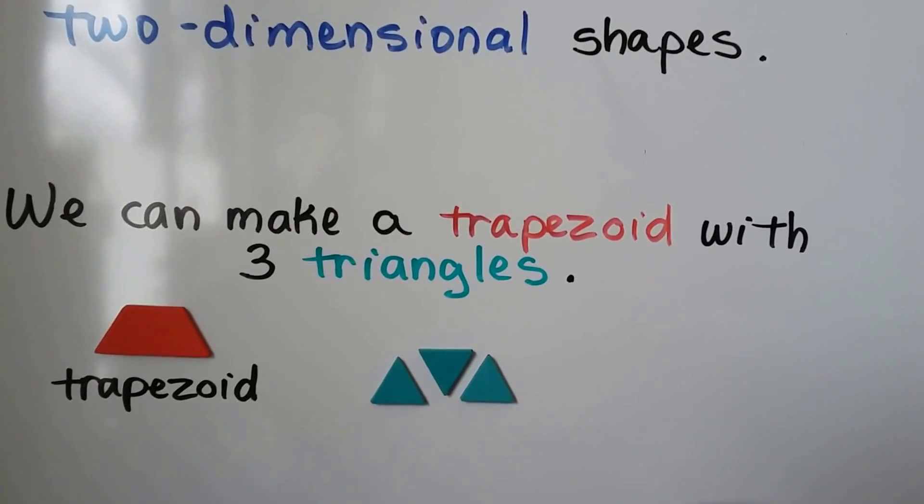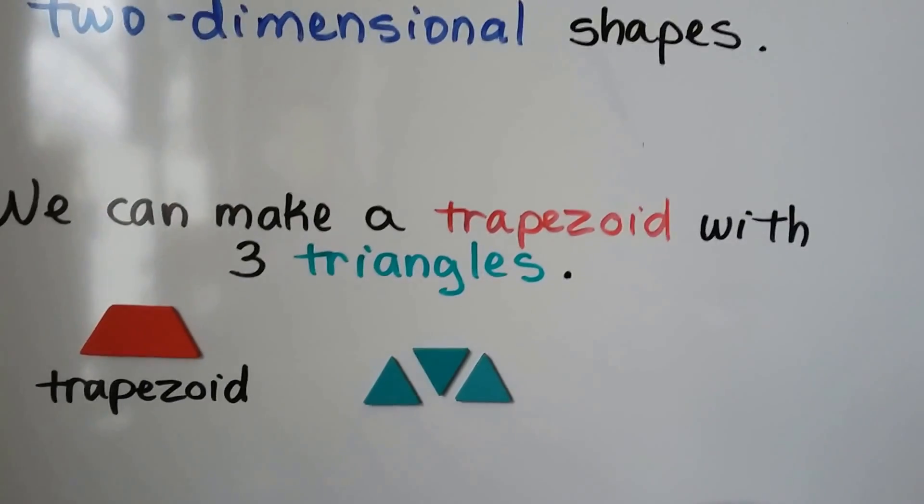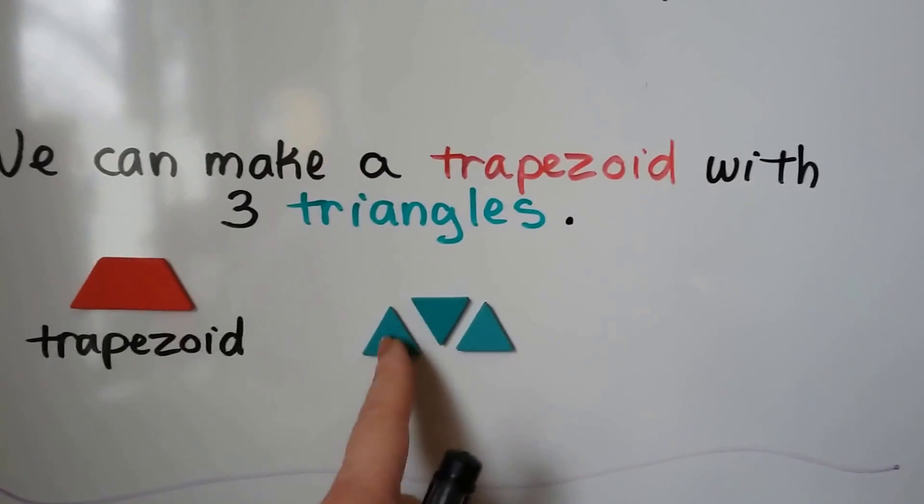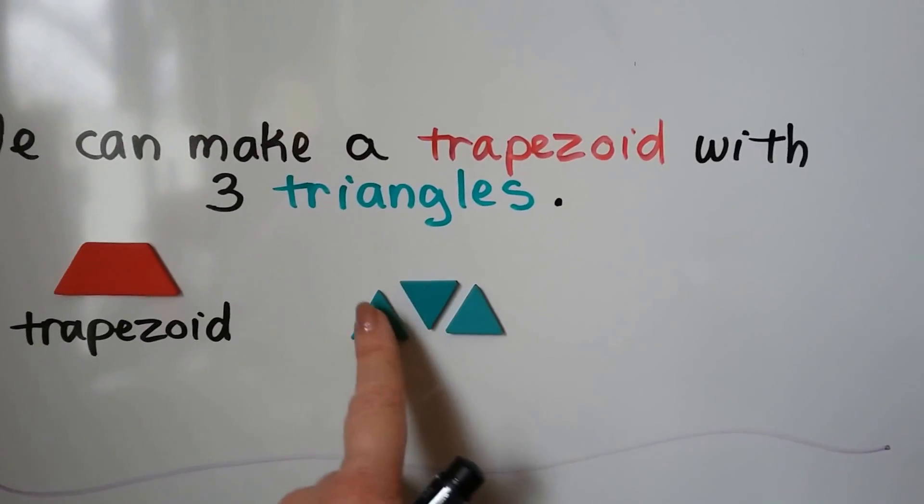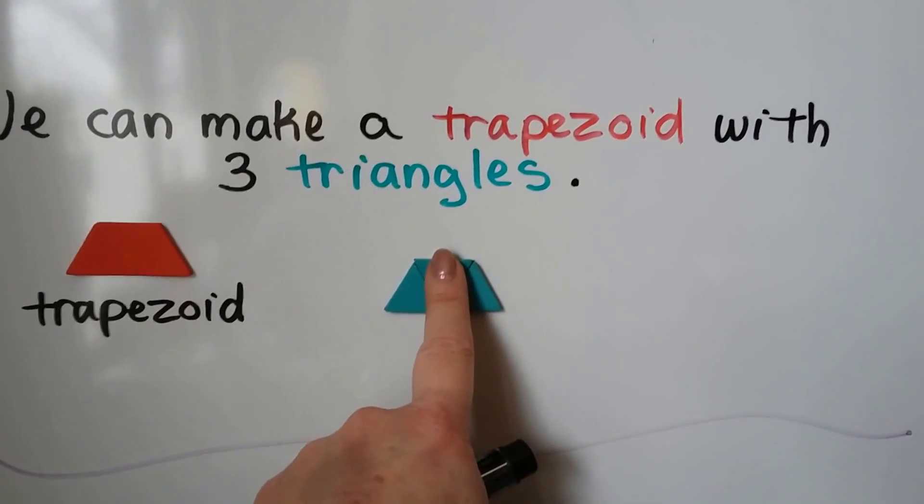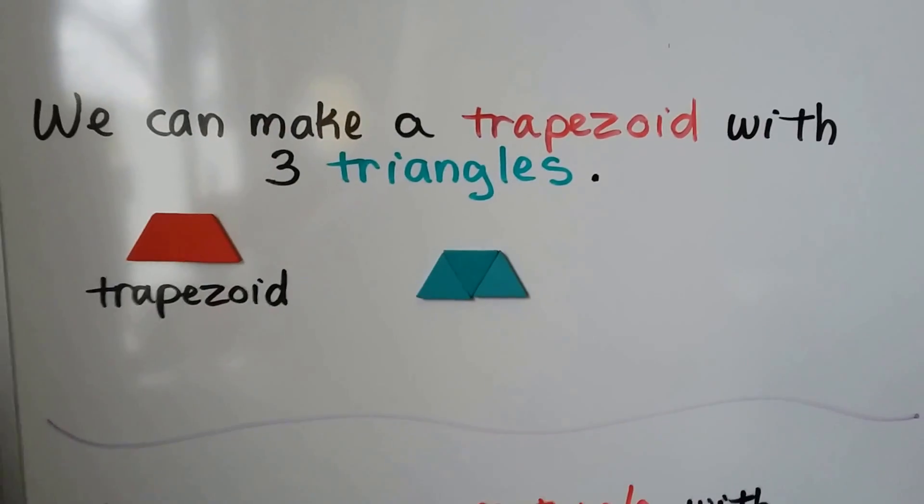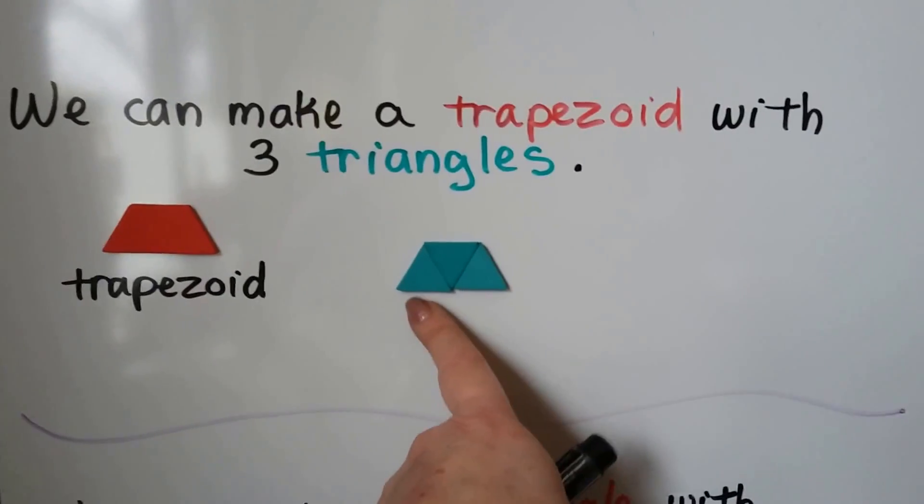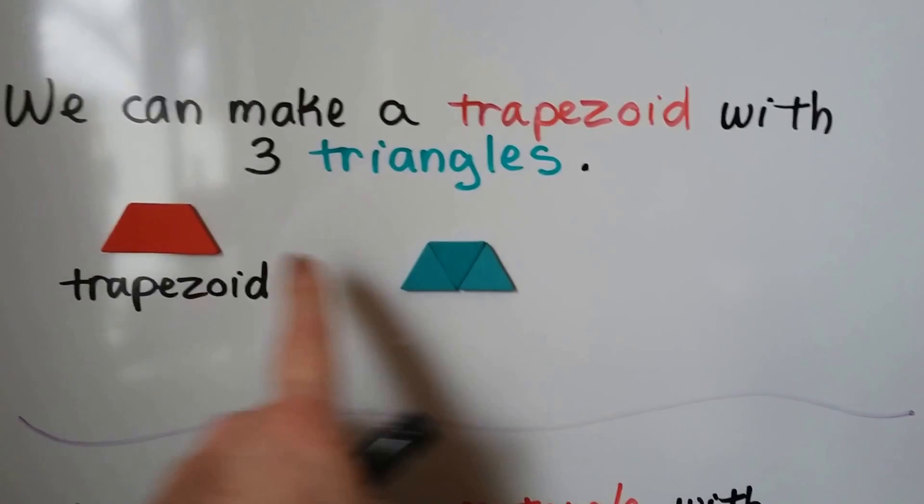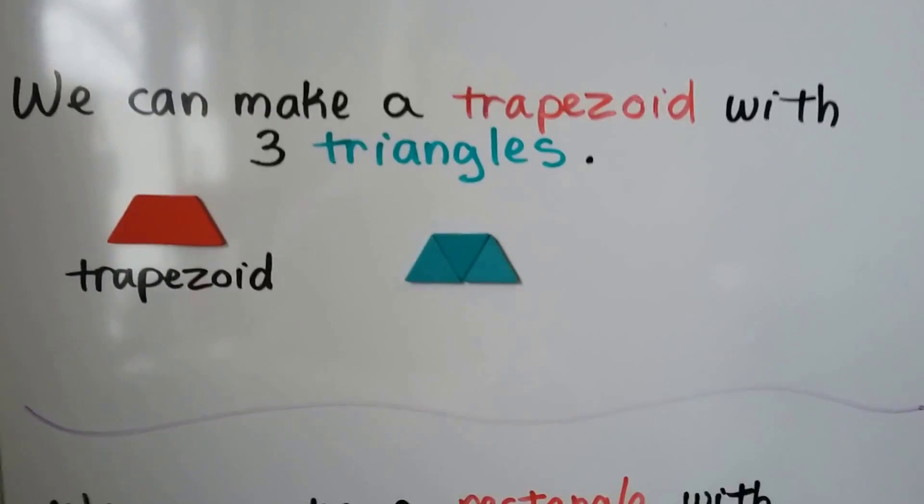We can make a trapezoid with three triangles. Here we have a trapezoid, and if I put one, two, three triangles together, watch what happens. Look, it made a trapezoid. See that? It's got the same shape as that trapezoid, and we did it with three triangles.